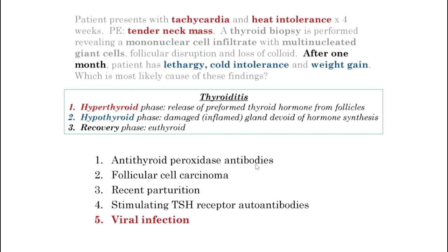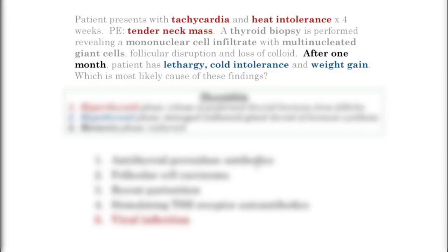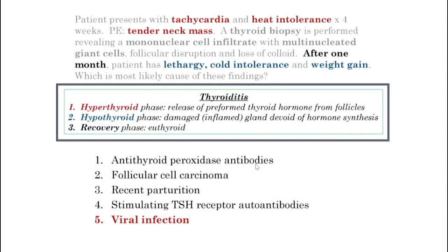Thyroiditis is confusing, important, and a great target. In this question you see tachycardia and heat intolerance — those are hyperthyroid symptoms — and a tender neck mass, which goes along with the thyroiditis. A month later you have the hypothyroid phase: lethargy, cold intolerance, and weight gain. The idea of thyroiditis coming in phases — hyperthyroid, followed by hypothyroid, followed by a recovery phase — is important.